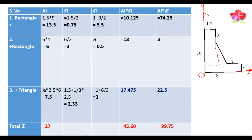To find the centroid of this composite figure, we assume this direction as x and this as y. For finding the centroid, we draw a table showing: serial number, Ai (area of individual components), x̄i (centroid of individual components in x direction), ȳi (centroid in y direction), and the products Ai·x̄i and Ai·ȳi — the product of individual areas times the centroid in each direction.